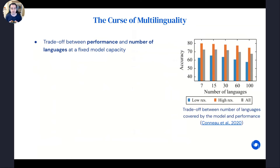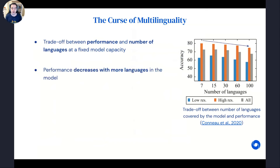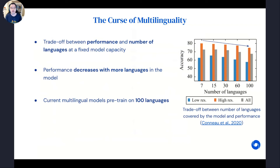Starting with the first challenge, the heart of this issue relates to what is known as the curse of multilinguality — the trade-off between a model's average performance on a number of different languages and the number of languages it has been pre-trained on. To make that concrete: with a model of fixed capacity, as we increase the number of languages the model has been pre-trained on, the more languages compete for the model's limited capacity, so for each individual language the model has fewer parameters to model that language appropriately.